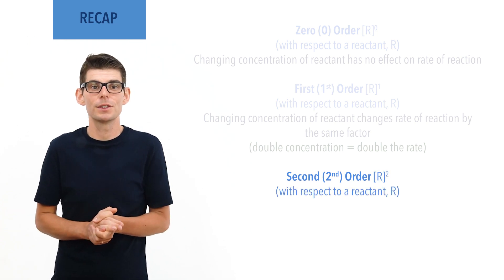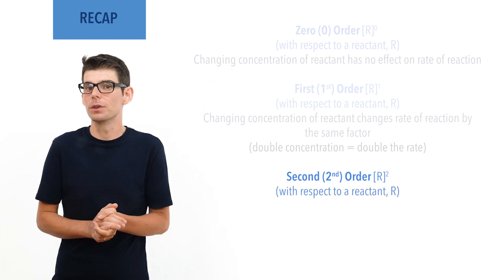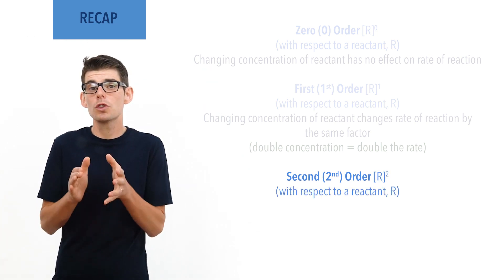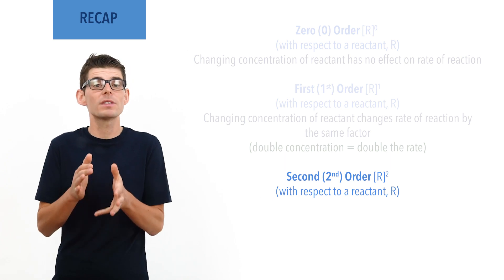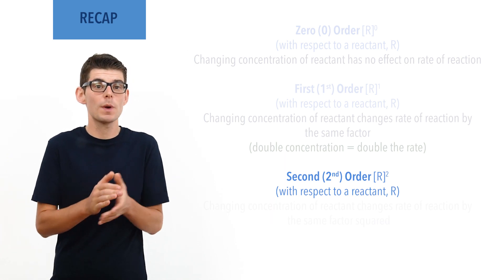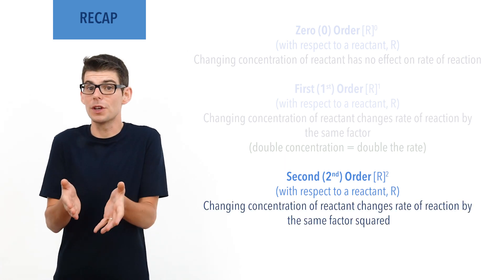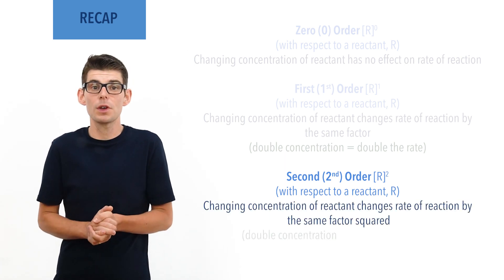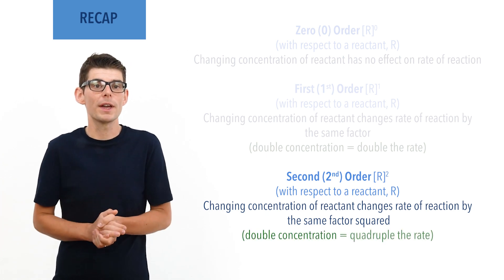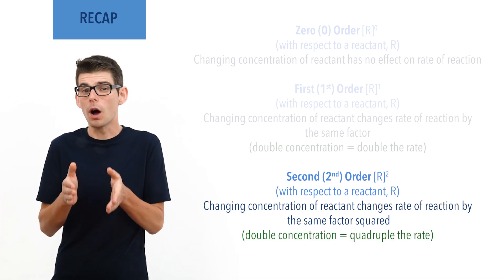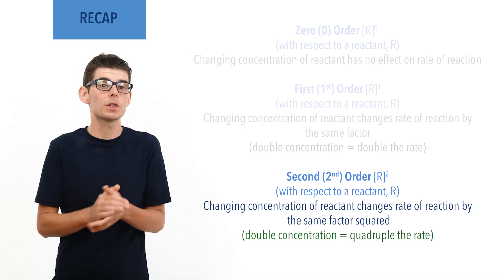If a reaction is second order with respect to a particular reactant, changing the concentration of the reactant will change the rate of the reaction by the same factor squared. For example, doubling the concentration will quadruple the rate, or halving the concentration would quarter the rate.